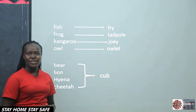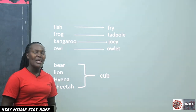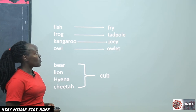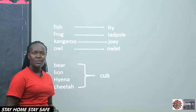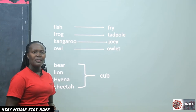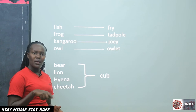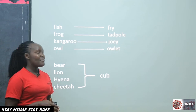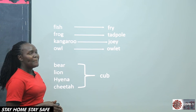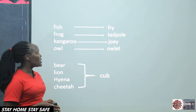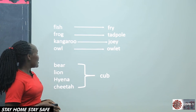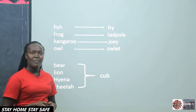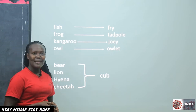We have a fish that we normally eat — we enjoy fish. The young one of the fish is called a fry. The spelling resembles the word for cooking when you are frying something — the same spelling, but they are different meanings. When it comes to a frog, it's a tadpole.